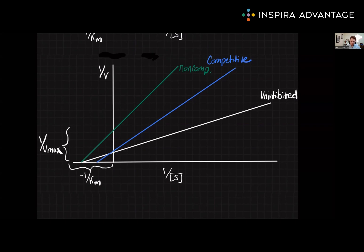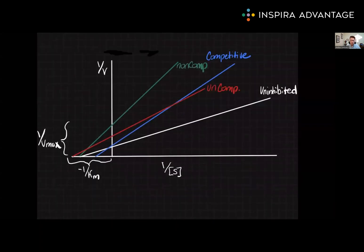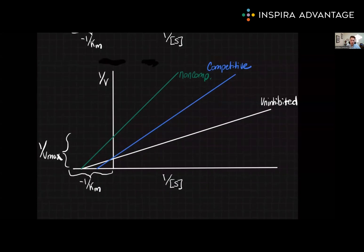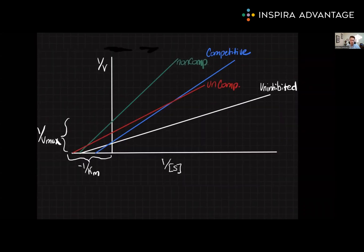Lastly, let's look at uncompetitive inhibition. Once again, pause the video and try and predict this on your own. Uncompetitive inhibition: Vmax and Km decrease. This means that both intercepts will be further from the origin than the uninhibited enzyme, because as the denominator value decreases, the overall value increases.